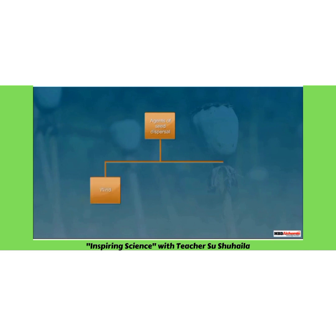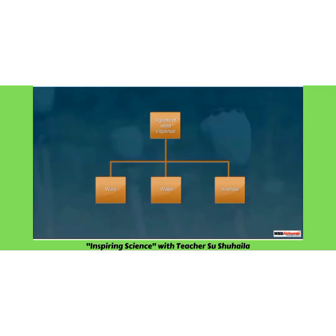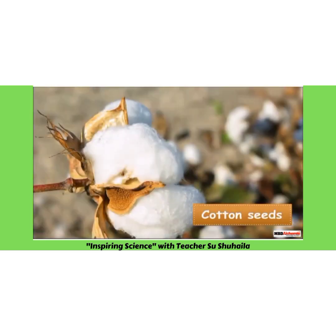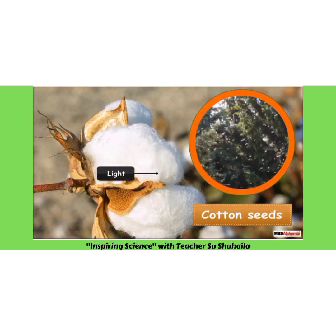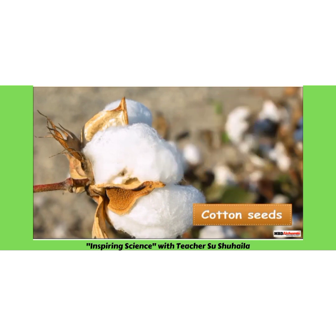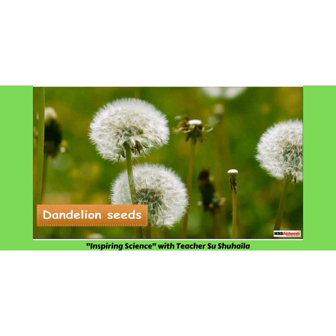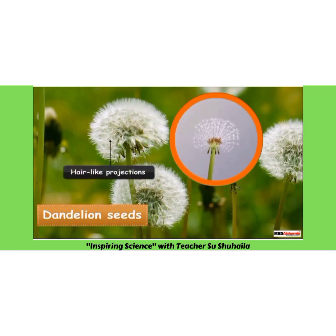In contrast, there are seeds of certain plants that need some agents for their dispersal. These agents can be wind, water or animals. Seeds of some plants like cotton are very light and are dispersed by wind. Seeds of some plants like dandelion have hair-like projections that help them to be carried by the wind.